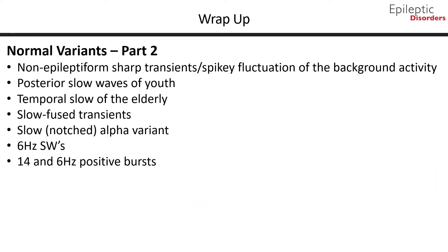In this module we discussed normal variants part 2. We talked about non-epileptiform sharp transients, spiky fluctuation of the background activity, posterior slow waves of youth, temporal slow of the elderly, slow fused transients, slow notched alpha variant, 6 Hz spike waves, and 14 and 6 Hz positive bursts.